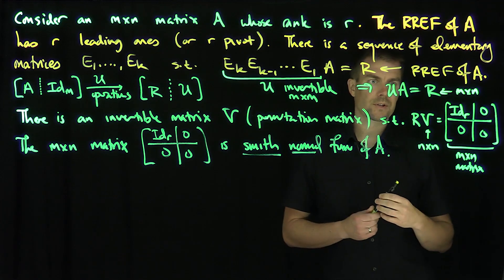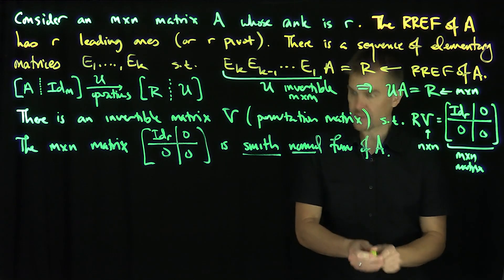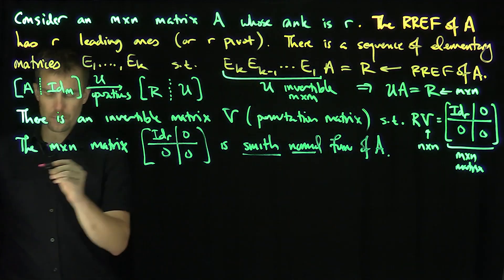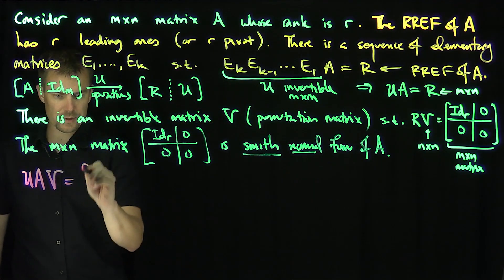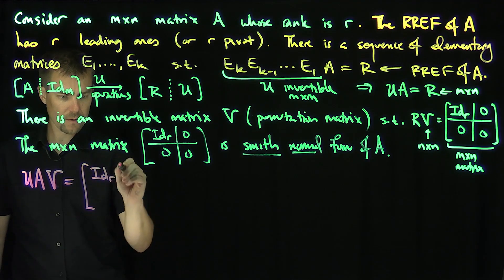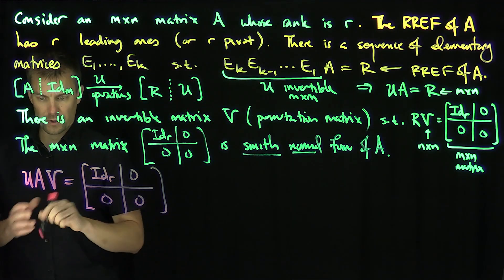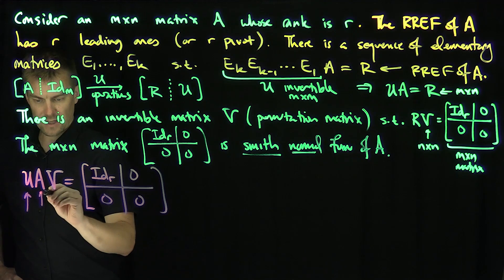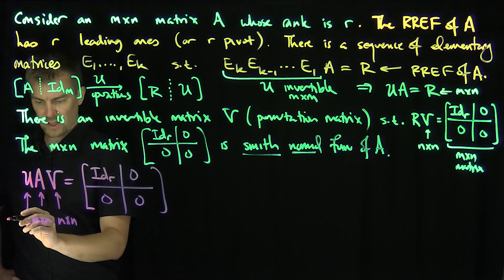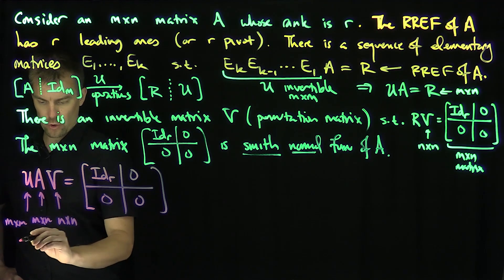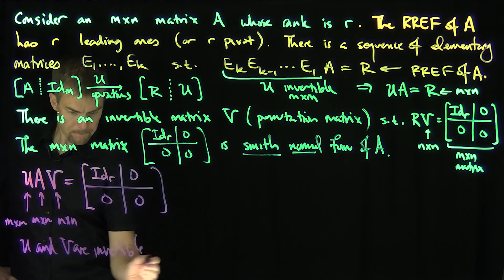We know that R times V equals this form, so U times A times V equals this Smith Normal Form. Succinctly: U times A times V equals the matrix with identity R in the top-left and zeros elsewhere. Here A is M by N, V is N by N and alters the columns, and U is M by M. Both U and V are invertible.